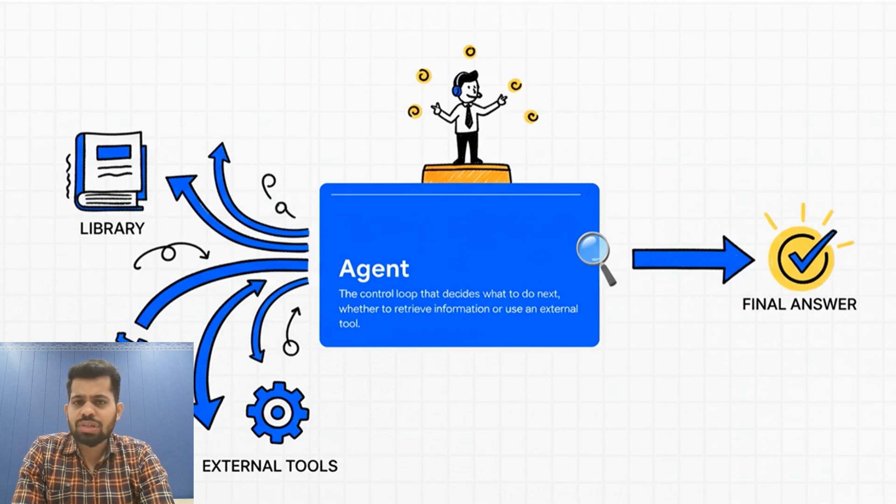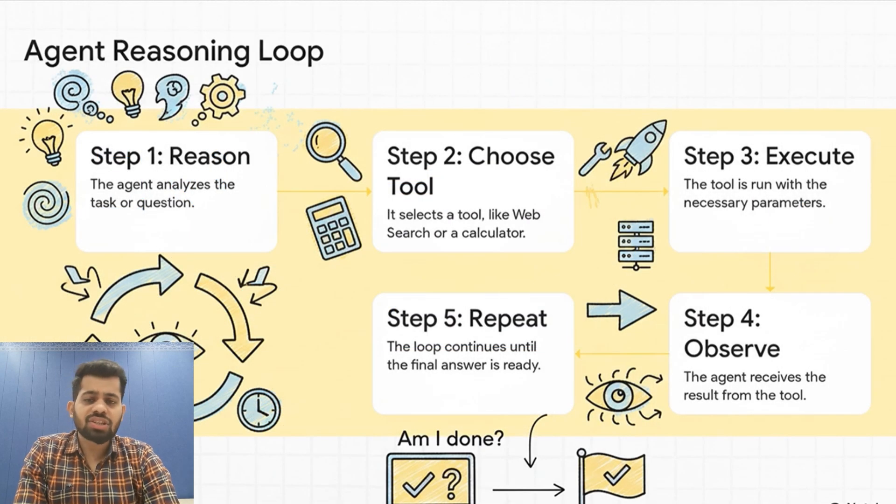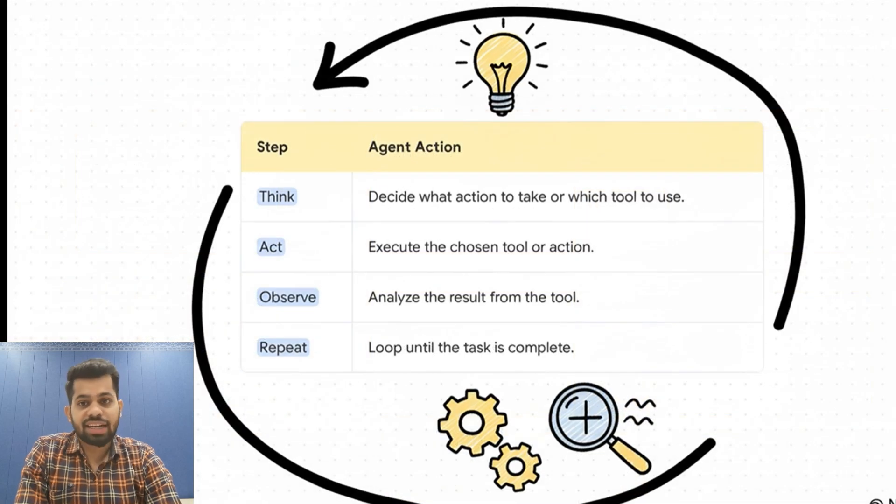Let's see how a simple agent works: It receives a task or a question. It reasons about what action to take, then chooses which tool to use and executes the chosen action. It observes the result and repeats until the task is complete. This is called the ReAct Agent - Reasoning plus Action. There are various other types of agents including Self-Reflection, RAGs, LATS, and many more. I have explained six most-used agent architectures in this video.